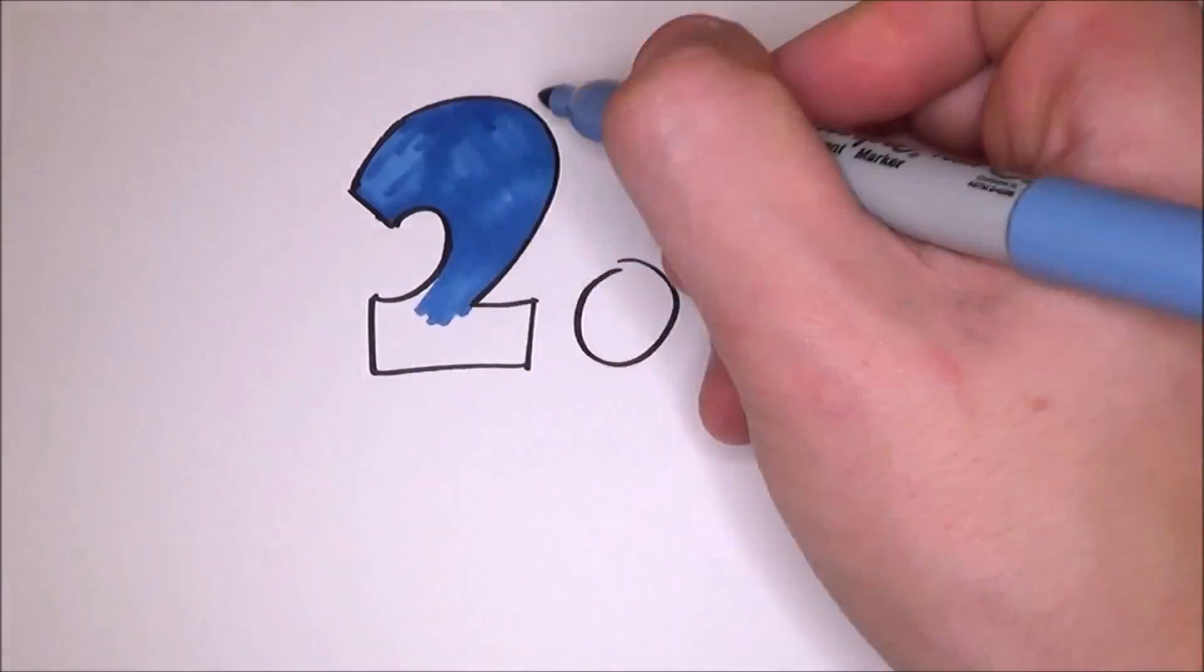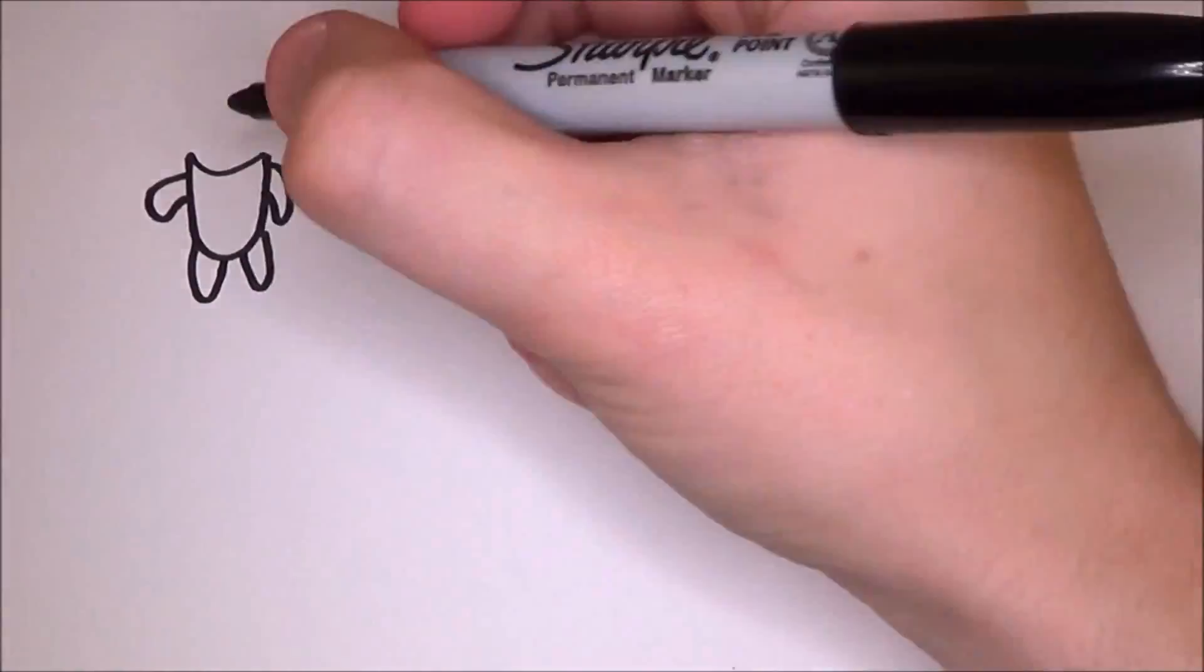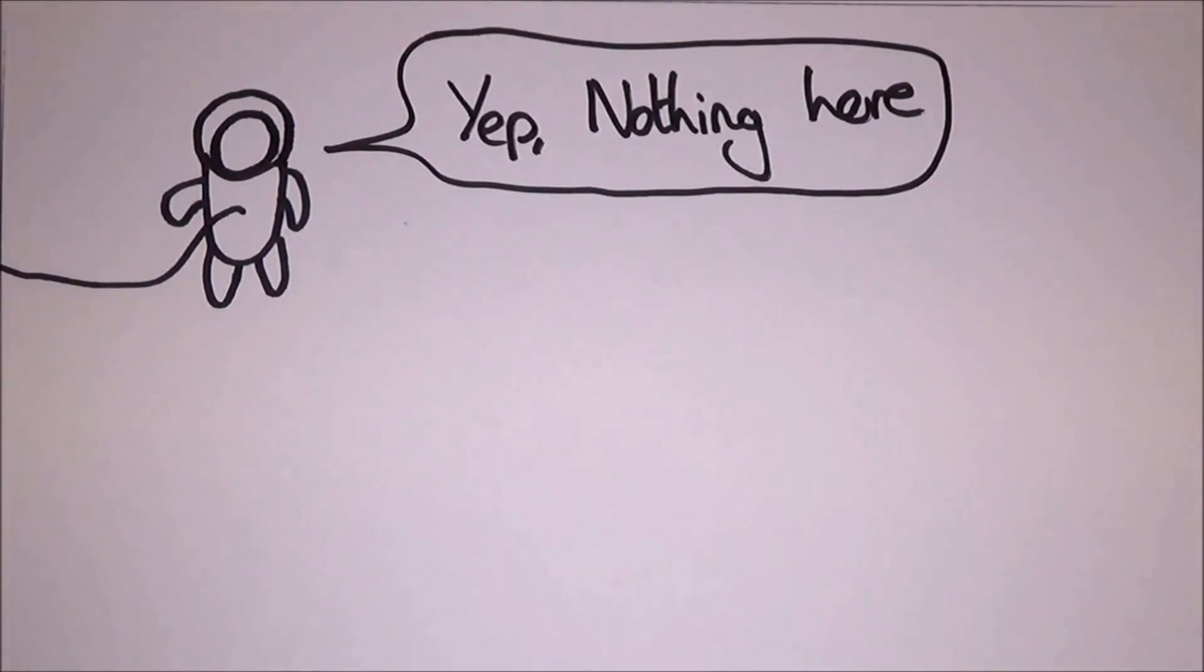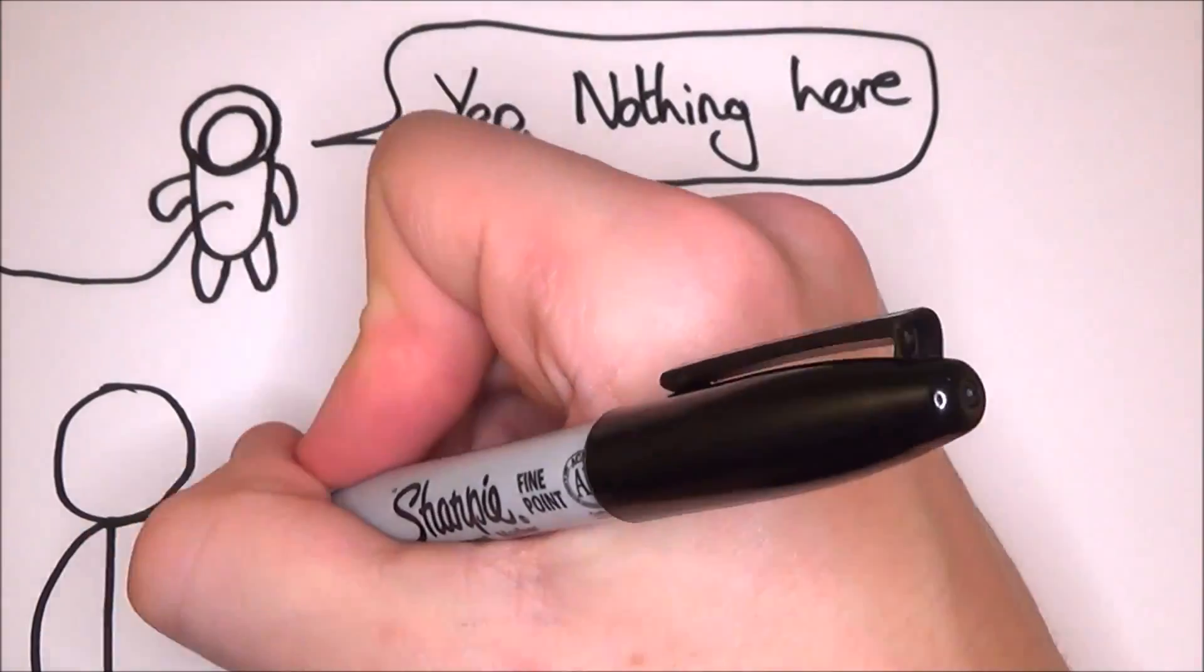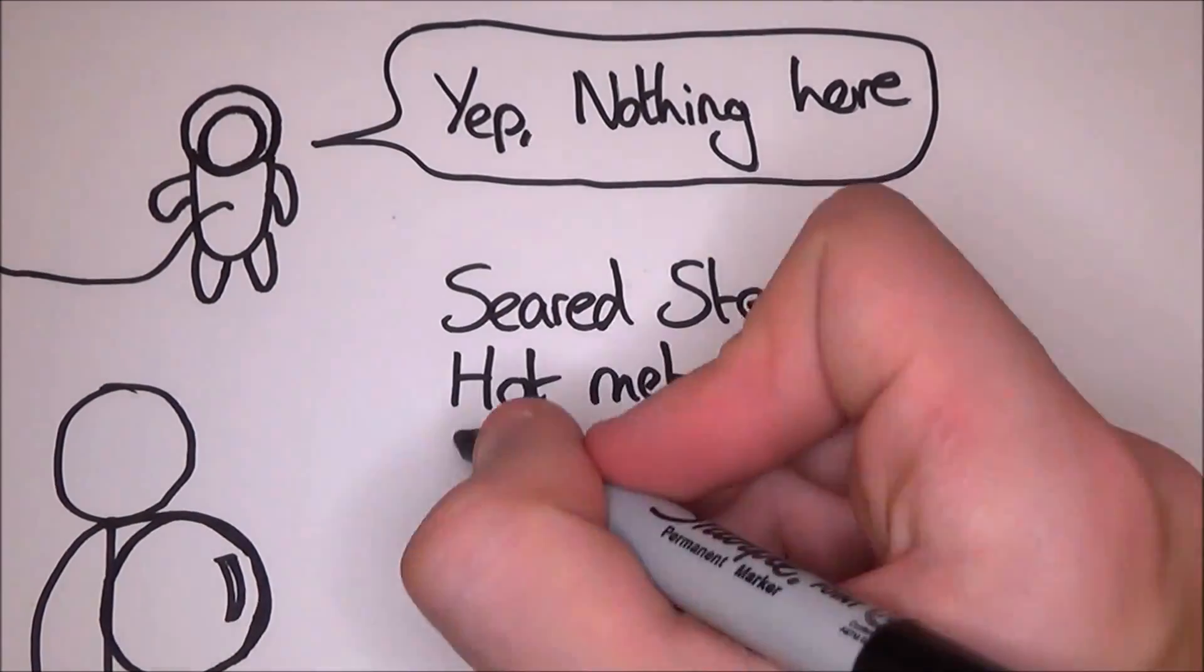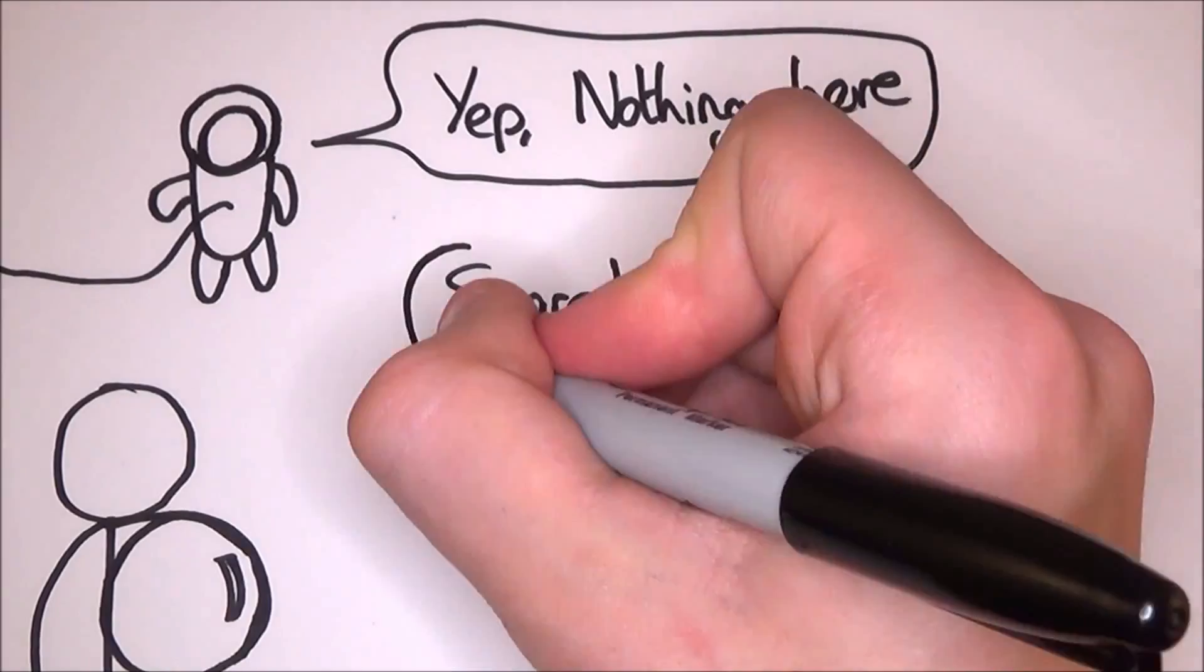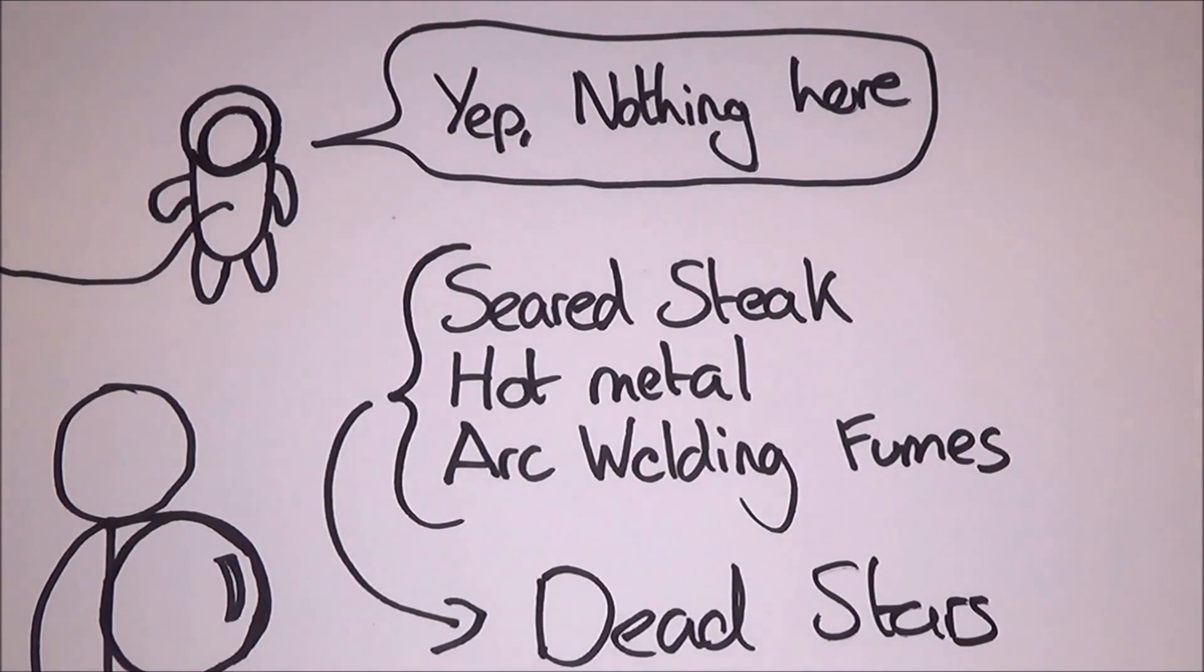Number 2 is possibly something that you've heard of. The smell of the cosmos. It is impossible to smell space, as it is a vacuum and there is nothing there to smell. But once you have been on a spacewalk, when you return and take off your suit, it's said that it smells like seared steak, hot metal or arc welding fumes. All of these make me think like something's been cooking, i.e. you, but scientists have suggested that it's actually a byproduct of dying stars.